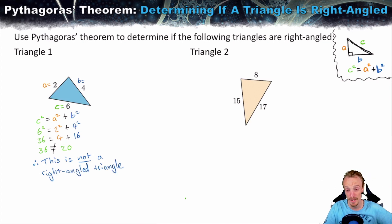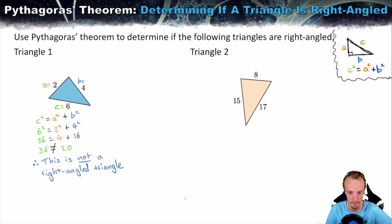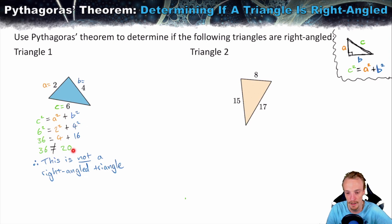That's essentially the step-by-step process: label the triangle, write out the formula, substitute the information in, and check to see whether it balances. If it does, it's right-angled. If it doesn't, it's not right-angled.